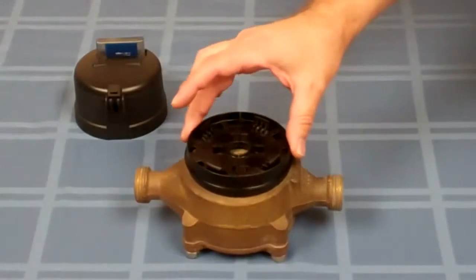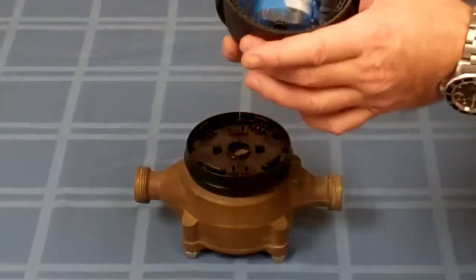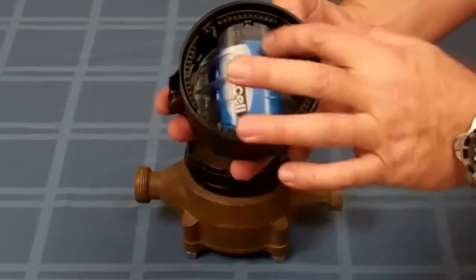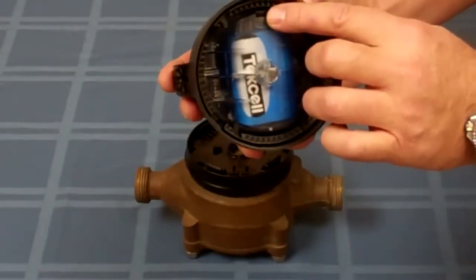So now that we have the base established, we can mount the register. But before we do, I want to call your attention to the underside of the register. On the Innovate itself, on one end, you're going to find this little rubber grommet.